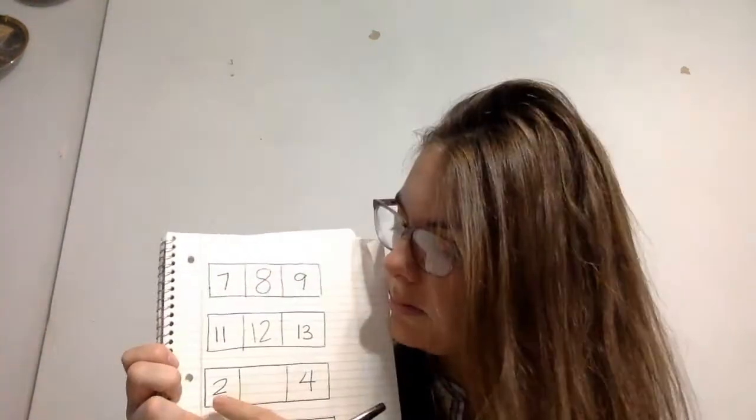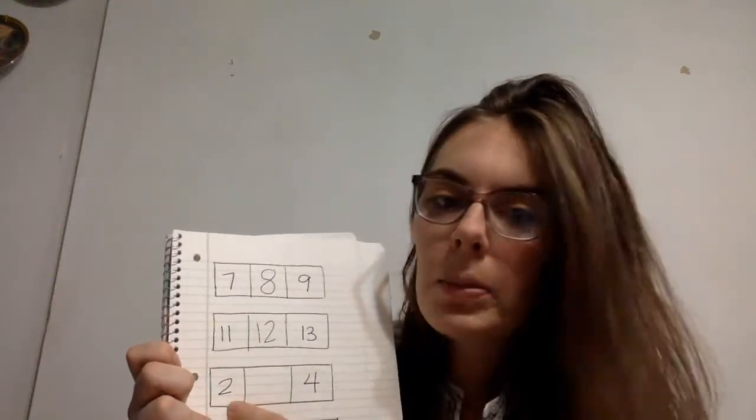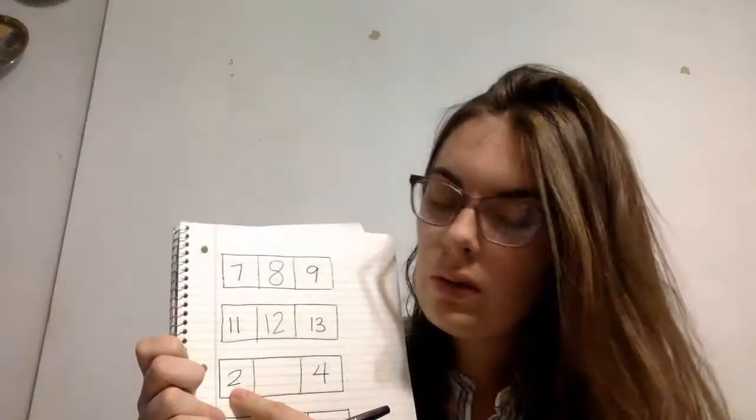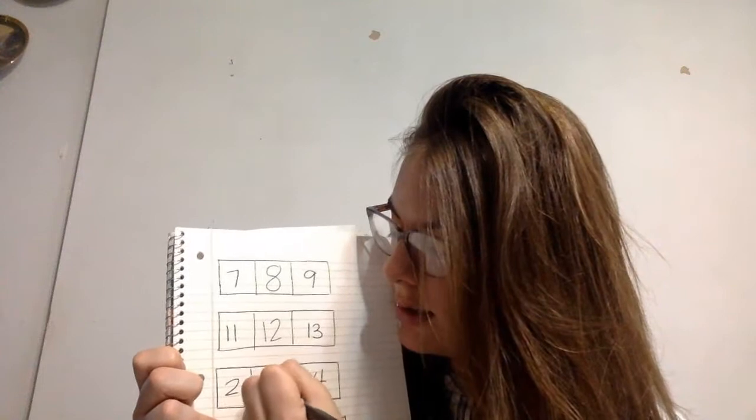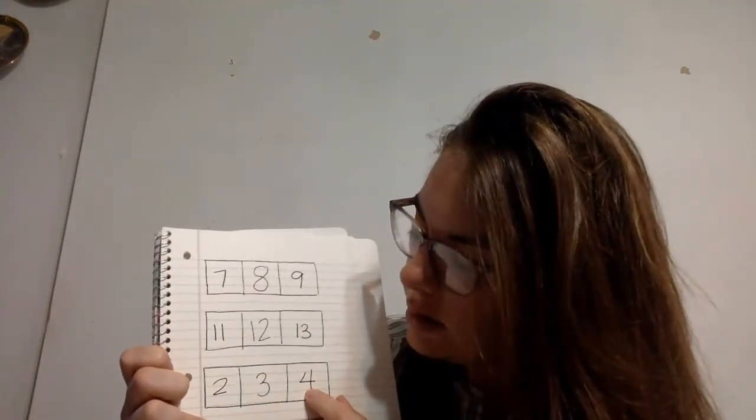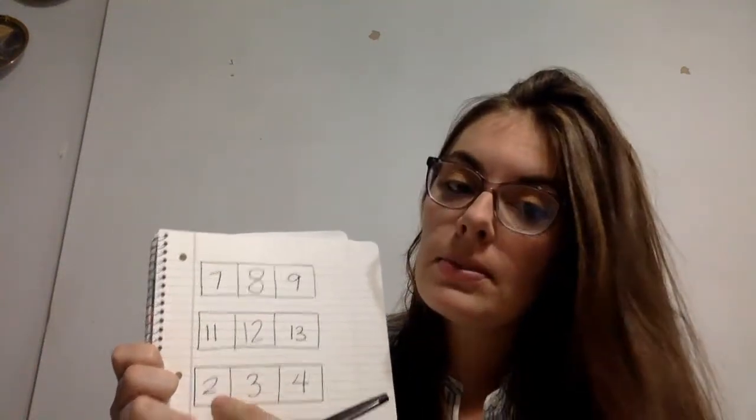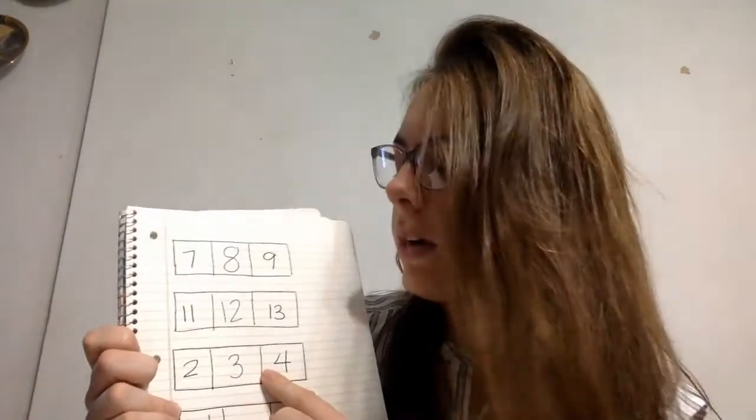Now let's look at this one. This is a number two. So we're going to count on from two. Two, three, four. So we know that three comes after two and before four.